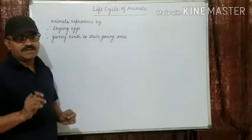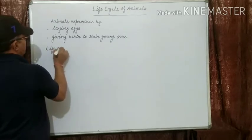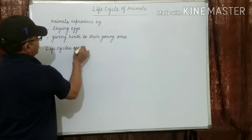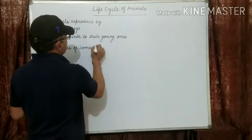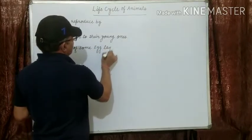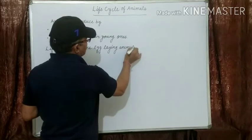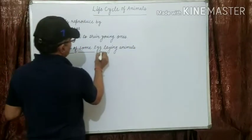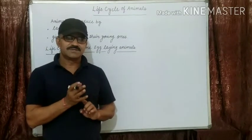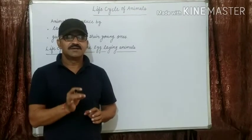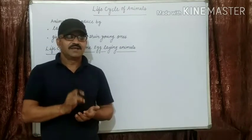First of all, we discuss about laying eggs — the life cycles of some egg-laying animals. All birds such as crows, sparrows, hens, and eagles reproduce by laying eggs. The female birds lay eggs in the nest.